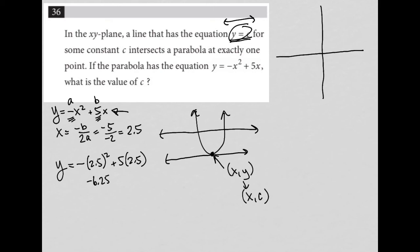Sorry, let me make sure that's right. That's 12.5, sorry. So I add 12.5 here. So I have y equals that. And then negative 6.25 plus 12.5 is equal to 6.25. So the y value is 6.25.